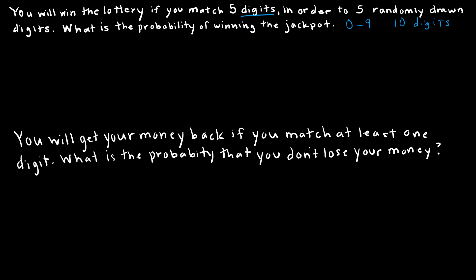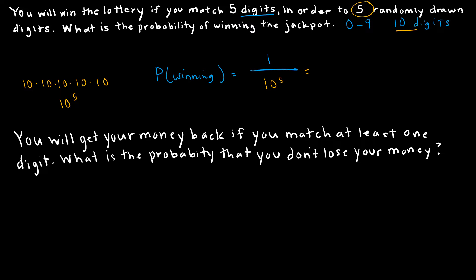If I'm looking for the probability of winning the jackpot, there's only one winning combination. So my probability of winning is 1 out of — how many different ways can this happen? I have 10 digits five times: 10 for the first draw, 10 for the second, third, fourth, and fifth, or just 10 to the fifth. So it's 1 over 10^5, which is 1 over 100,000, or as a decimal, 0.00001. So 1 in 100,000 that I will win.